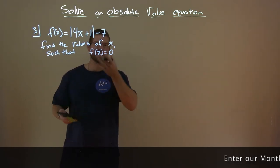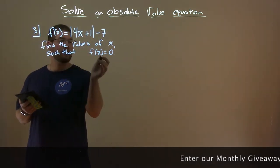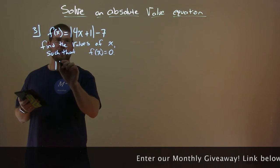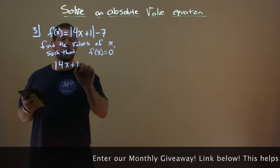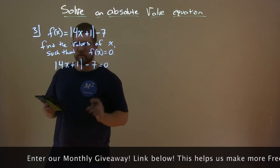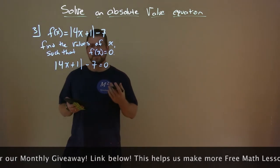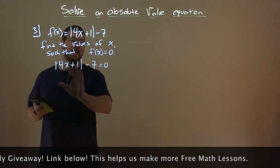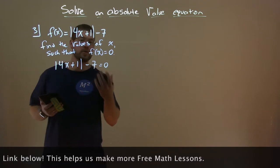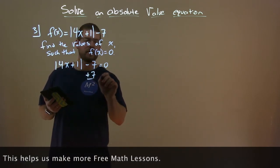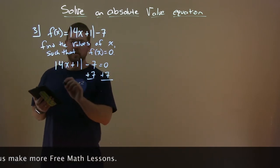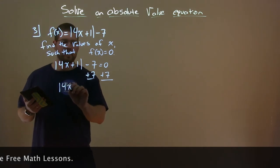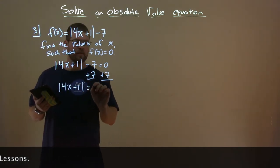So, what we need to do, set it equal to 0. We set f(x) equal to 0. So, absolute value of 4x plus 1 minus 7 equals 0. Our first step, we want to get the absolute value by itself. To do that, we add 7 to both sides, and we're left with the absolute value of 4x plus 1 equals positive 7.